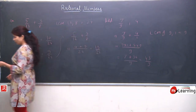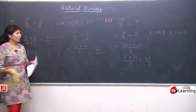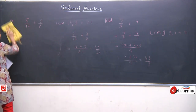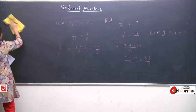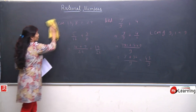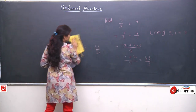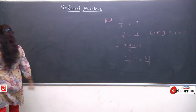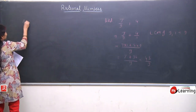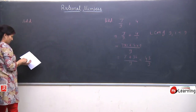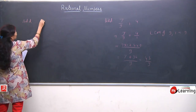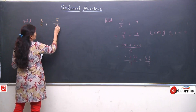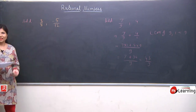We have done two positive examples. Now I'll take negative ones, because rational numbers are not always positive — that is not necessary. So the next question is: add 3 upon 8 and minus 5 upon 12.